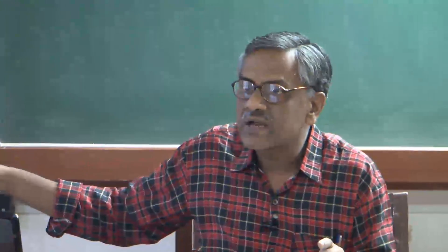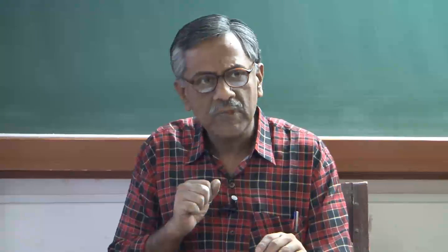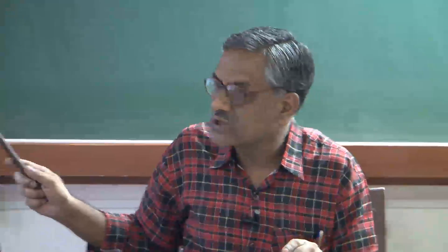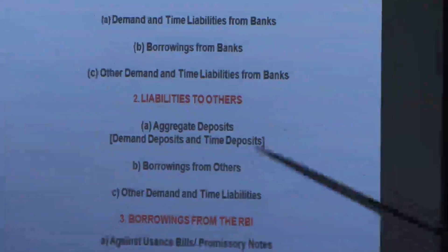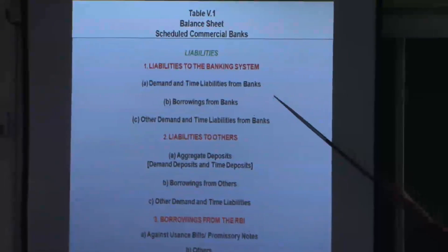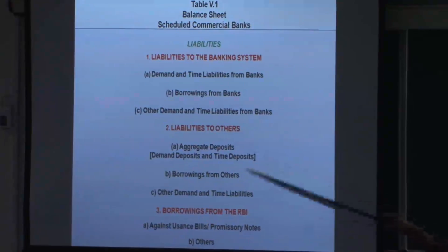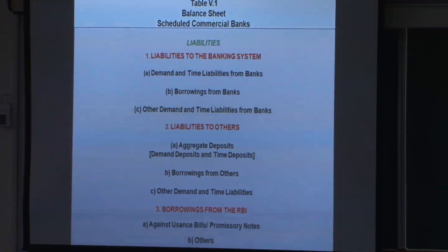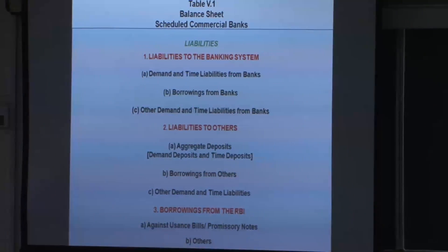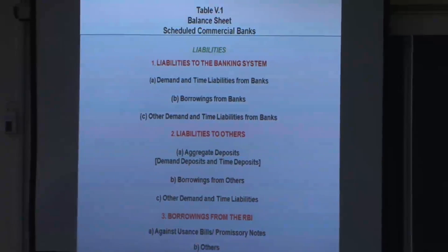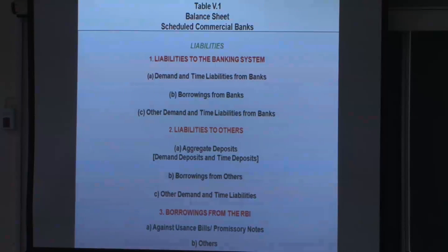So there are two kinds of borrowing from the RBI: one is against usance bills or promissory notes like commercial paper and commercial bills, and the other is against government securities. Just like at home — if I need cash, I can take my jewelry to a funding agency and get cash against it, or sell off securities. Similarly, banks go to the RBI and borrow against whatever valuables the RBI is willing to accept. That is where borrowings from the RBI take place.